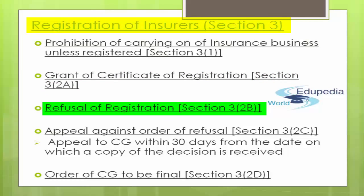Third: Refusal under Section 3(2b). If the authority refuses registration—finding you are not a fit person—they shall record the reasons for such decision and shall furnish a copy to the applicant accordingly.